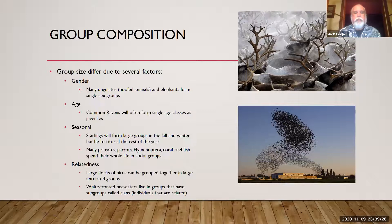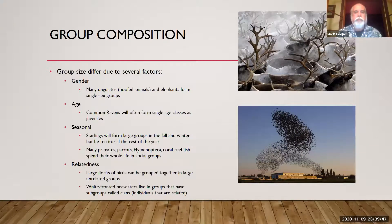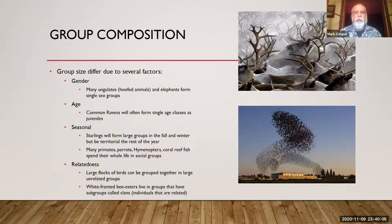Primates, parrots, hymenoptera — which include bees, wasps, and ants — and a lot of coral reef fish will group together in social groups for their whole lives. Then there's relatedness: you hang with your family, and that creates opportunities to pass your genes to the next generation. There are also large mixed flocks where every individual gets some kind of benefit — we've talked about this with the dilution effect.